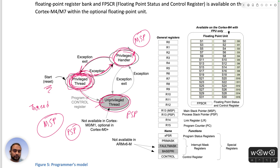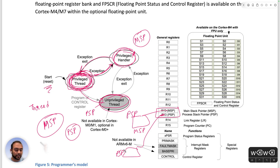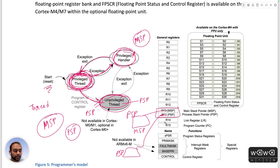In the previous video we talked about R13 pointing to either PSP or MSP. When we start in privileged thread mode with MSP, R13 uses the value in the shadow register MSP behind the scenes. If we change the stack pointer to PSP, R13 points to the value that PSP has. Then if an exception happens and we go to handler mode, R13 automatically points to MSP.